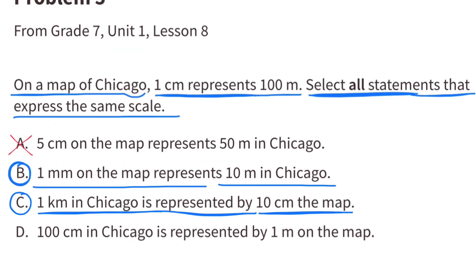A does not represent the same scale because 1 centimeter times 5 equals 5 centimeters, but 100 meters times 5 does not equal 50 meters. And D does not represent the same scale because 1 centimeter times 100 equals 100 centimeters, but 100 meters times 100 does not equal 1 meter.